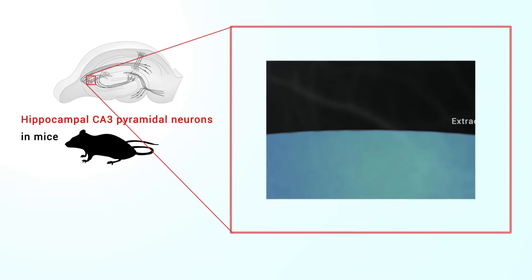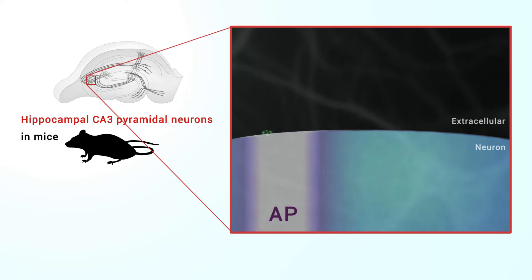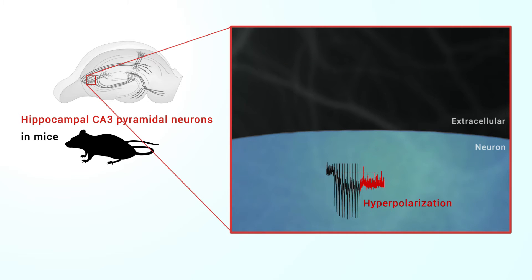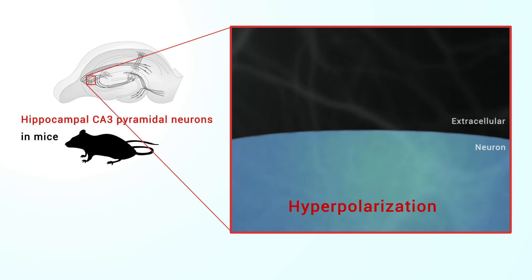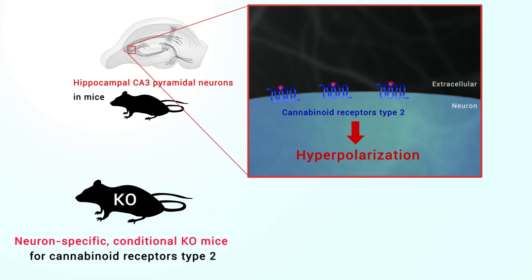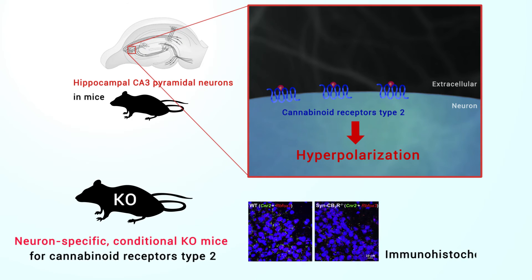In this paper, we find that action-potential-driven endocannabinoid release leads to a long-lasting membrane potential hyperpolarization in hippocampal principal cells that is independent of cannabinoid receptor type 1. The hyperpolarization, which is specific to CA3 and CA2 pyramidal cells, depends on the activation of neuronal cannabinoid receptors type 2, as shown by a combined pharmacogenetic and immunohistochemical approach.